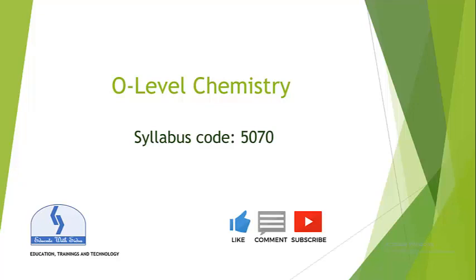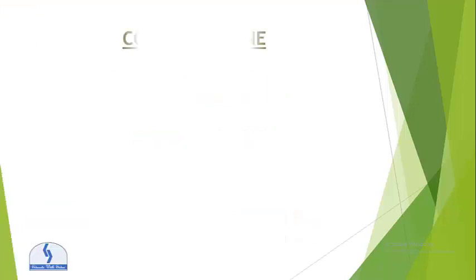In this video I will tell you about the whole syllabus and course outline of O-Level Chemistry. The syllabus code for this is 5070, and the course outline is: